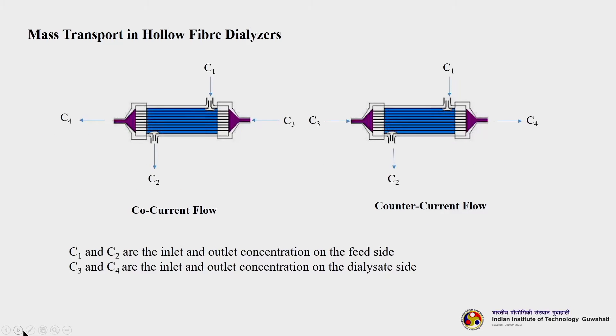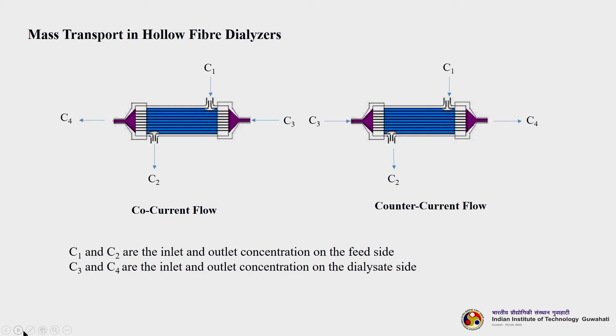This is mass transport in hollow fibre dialysers. Two types of dialysers are shown: co-current flow, where feed and dialysate flow in the same direction, and counter-current flow, where they flow in opposite directions. C1 and C2 are the inlet and outlet concentrations on the feed side, and C3 and C4 are the inlet and outlet concentrations on the dialysate side.